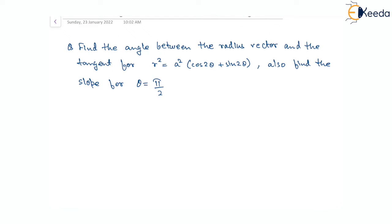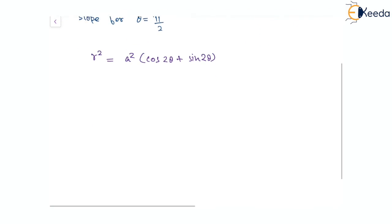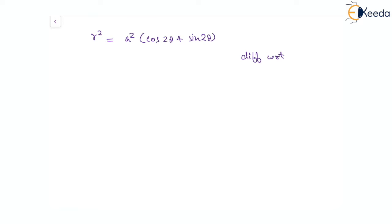Starting with the polar curve, that is r² = a²(cos2θ + sin2θ), let us differentiate this with respect to θ. On the left side, applying the chain rule: 2r(dr/dθ) = a²(−2sin2θ + 2cos2θ).